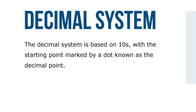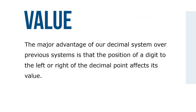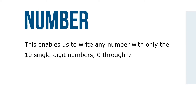The decimal system is based on tens, with the starting point marked by a dot known as the decimal point. The major advantage of our decimal system over previous systems is that the position of the digit to the left or the right of the decimal point affects its value. This enables us to write any number with only the ten single-digit numbers 0 through 9.